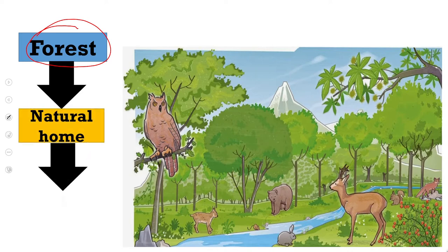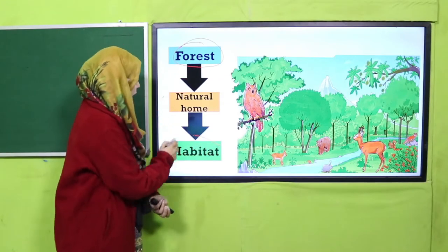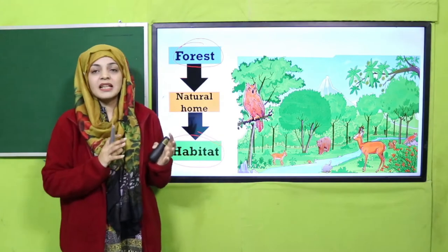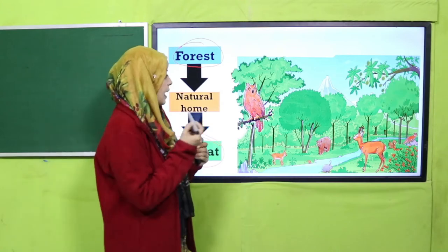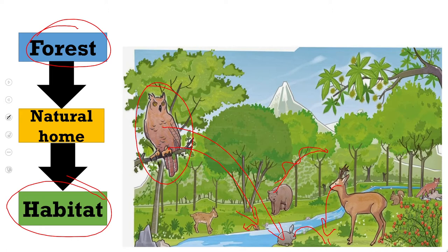The natural home of any animal or plant is called a habitat. Let's talk about this owl — it feeds on the mice and the rabbits, whereas the rabbit eats grass and plants. The mouse eats different worms from the soil and other small animals. This deer feeds on grass, a bear eats fish, the fish live inside the water, and the squirrel eats plants and berries. This fox eats the squirrel. So they are all connected with each other.